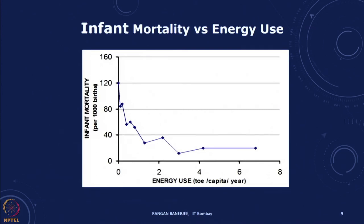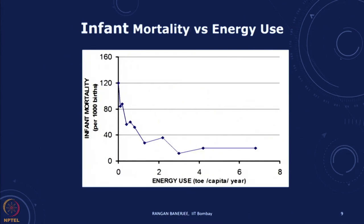Infant mortality — the number of deaths of children up to age 5 per 1000 births — also declines in countries where energy use reaches around 3 to 4 tons of oil equivalent per person per year, indicating a better quality of life. We can see very clearly that increasing energy services per person improves all of these indices — whether literacy, life expectancy, or infant mortality — they all tend to do better.